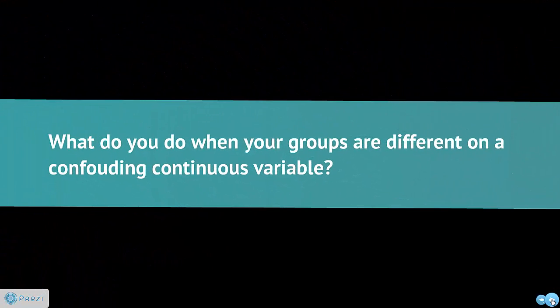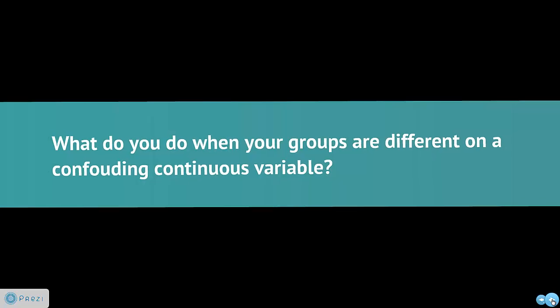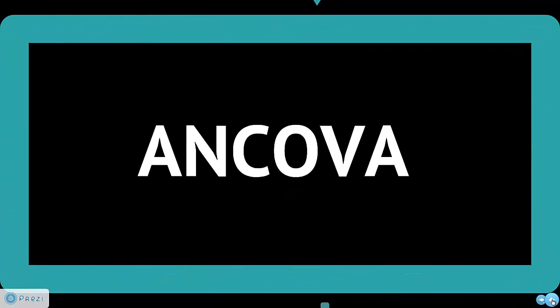Now sometimes you have more than just the groups, but the groups may be different on a continuous variable. Think of if I'm comparing the weight outcomes of a group that I'm treating for weight loss and a group I'm not, but it turns out they're different in the weights that they start with. So there's a confounding variable, and we'll talk more about what confounding variables are. But what do I do when my groups have a confounding variable, and it's a continuous variable? Well, for that, we can use what's called an ANCOVA, or analysis of covariance, which is just a variation on an ANOVA.